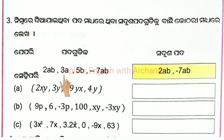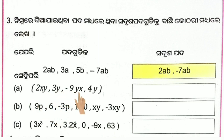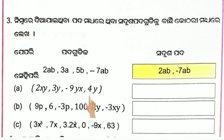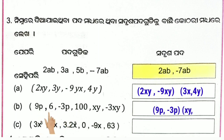સદ્રૂશ પદ ભેગા કરો: 2AB, 3A, 5B, minus 7AB — સદ્રૂશ પદ ભેગા કરો. 2XY, 3Y, minus 9YX, 4Y — 2XY અને minus 9YX સદ્રૂશ; 3Y અને 4Y સદ્રૂશ. 9P, 6, minus 3P, 100XY, minus 3xy.